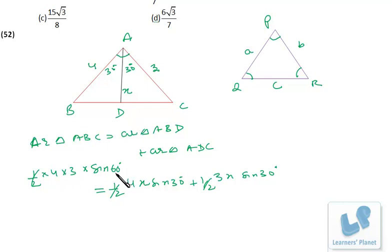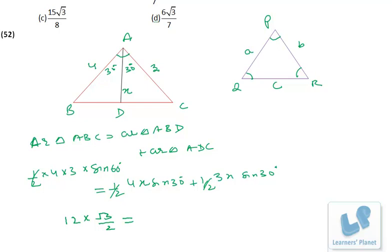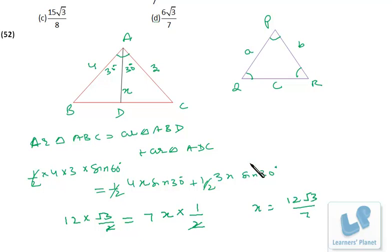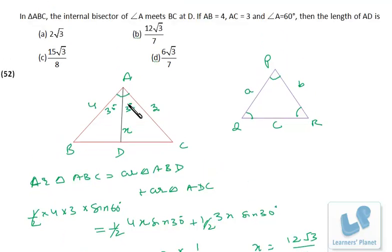sin 60° = √3/2, so we get 12 × (√3/2) = 4X sin 30° + 3X sin 30°, which is 7X × sin 30°. Since sin 30° = 1/2, solving gives X = 12√3/7. This is the length of AD. The answer is option B: 12√3/7. The problem becomes very simple if you know the sine formula — it can be used whenever one angle and the two included sides are given.